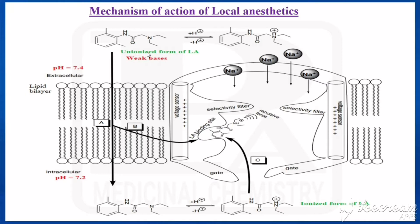The local anesthetic — whether it is an amide local anesthetic or an ester local anesthetic — these are weak bases. Only the unionized form of the local anesthetic can enter the lipid bilayer. Upon entering, it goes into the intracellular region where the pH is slightly more acidic than the extracellular region, so it has to be protonated — that is, it is converted to the ionized form.